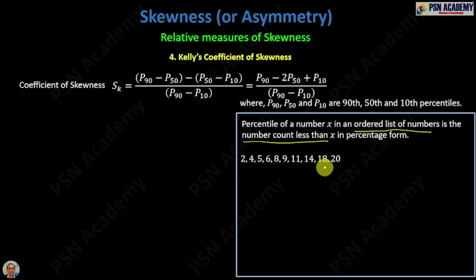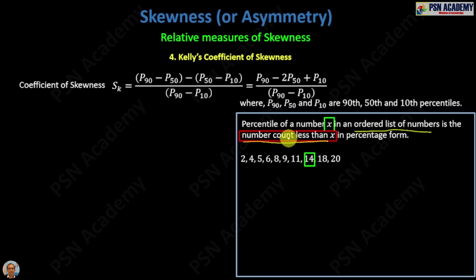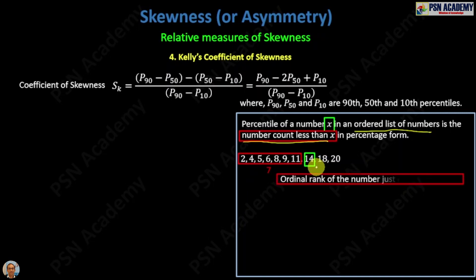Let's take an example. The numbers are in an ordered list, in ascending order, and suppose our x is 14 — we want to find the percentile of 14. We count the number of items less than x, which means we count the numbers from 2 to 11, because all of those numbers are less than 14. If you count them, you get 7. So 7 numbers are less than 14, and 7 is the ordinal rank — one rank below x, meaning 11 is just below 14 and has rank 7.